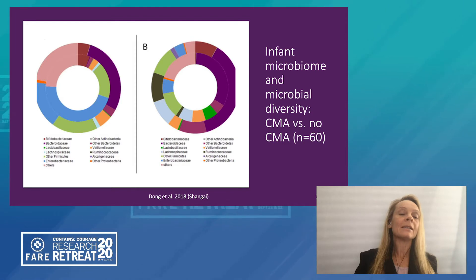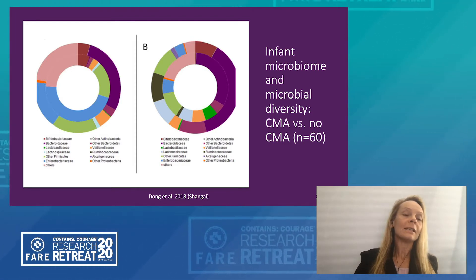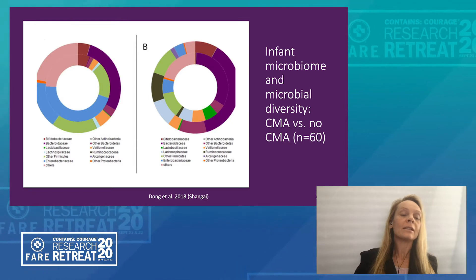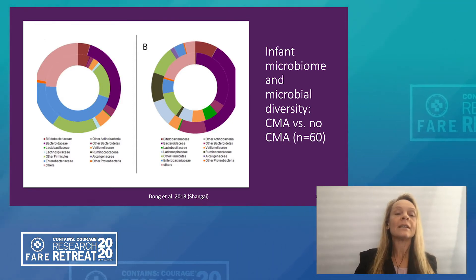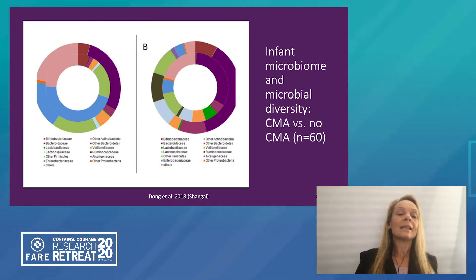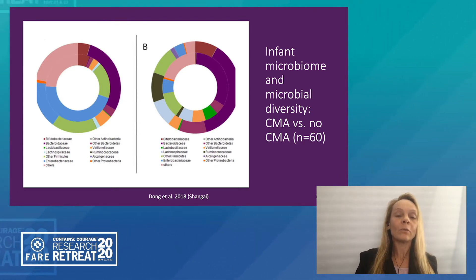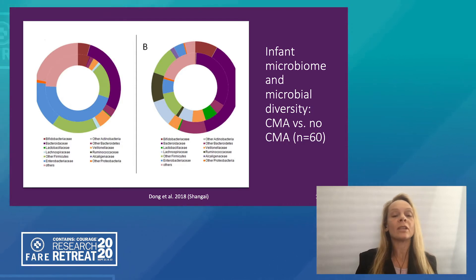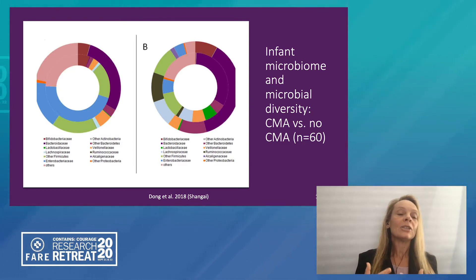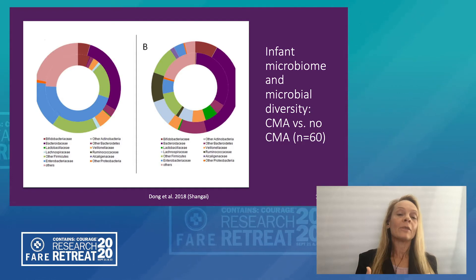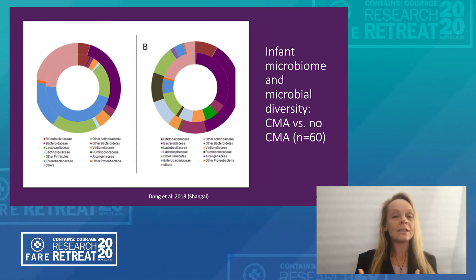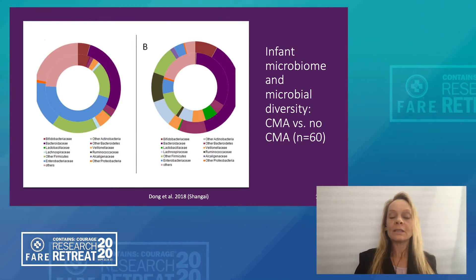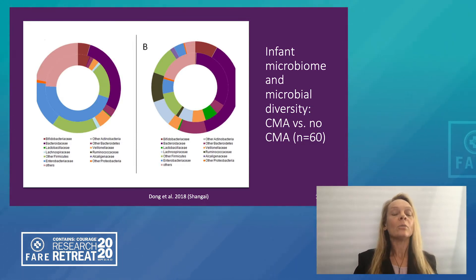This is the baseline data — the children with cow's milk allergy are the inner circle, children without cow's milk allergy are the outer circle, and then the same children six months later. Interestingly, even the change in the microbiome over six months was very different between children with and without cow's milk allergy. These slides clearly show that based on the limited data we have, there are differences at baseline, differences six months later, and also differences in terms of which children will eventually outgrow their cow's milk allergy versus those who don't.